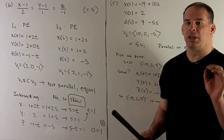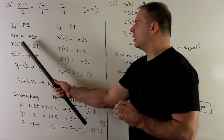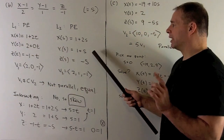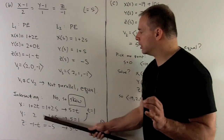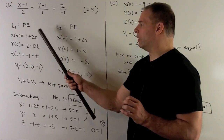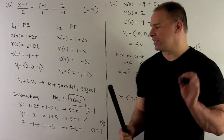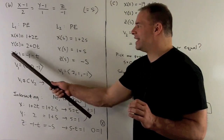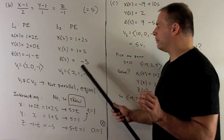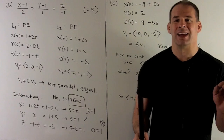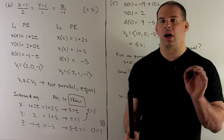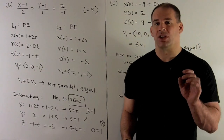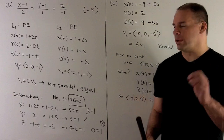To check for intersection, we set the x, y, and z equations equal to one another. From the y-equations: 2 equals 1 plus s, giving s equals 1. From the x-equations: 1 plus 2t equals 1 plus 2s, giving s equals t, so t equals 1. But the z-equations give minus 1 minus t equals minus s, or s minus t equals 1. Substituting s equals 1 and t equals 1 gives 0 equals 1, a contradiction. There is no solution, meaning no point of intersection — these lines are skew.